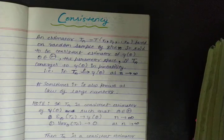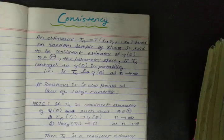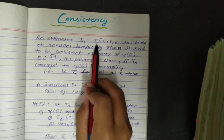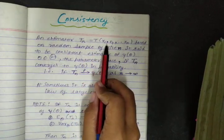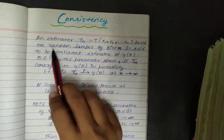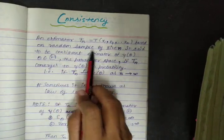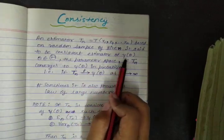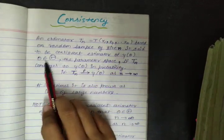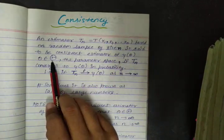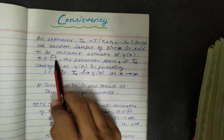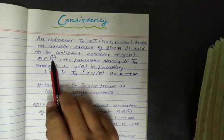In this video, I will explain you about Basics of Consistency. An estimator Tn, which is equal to T based on random sample of size n, is said to be a consistent estimator of gamma theta, where theta belongs to capital theta, which is the parameter space.